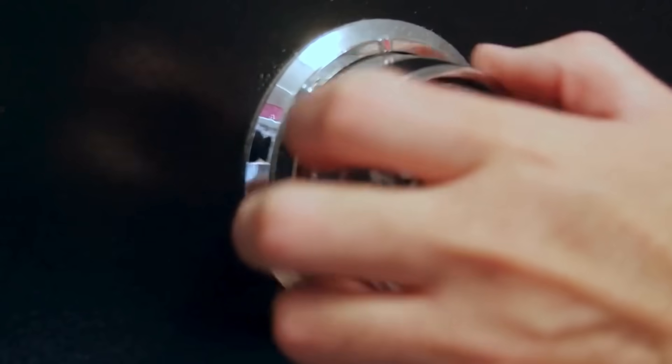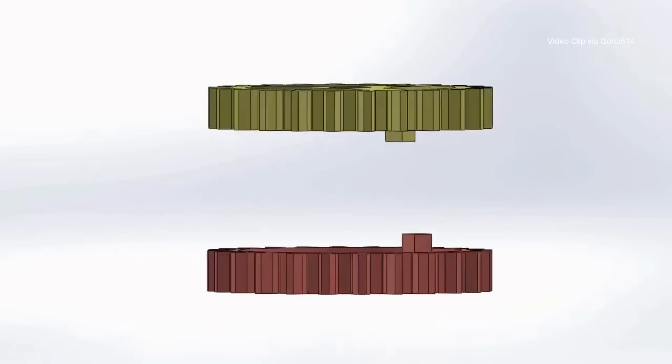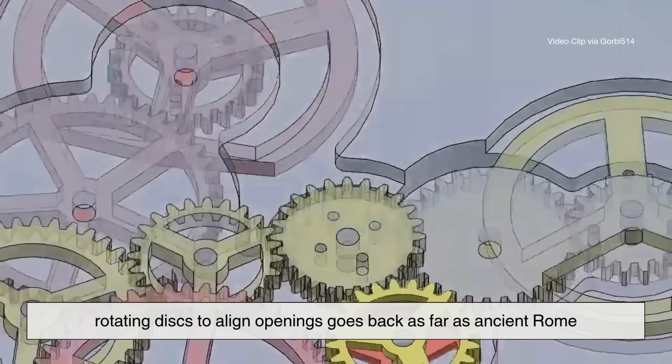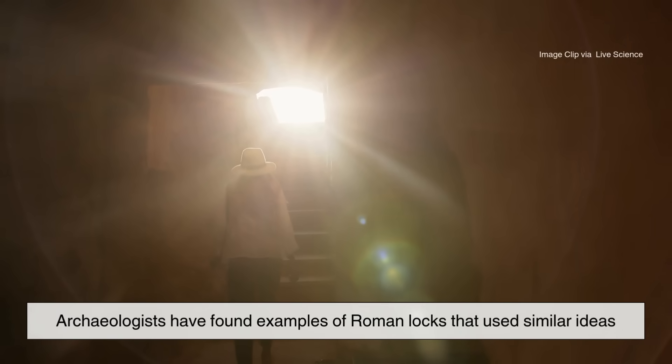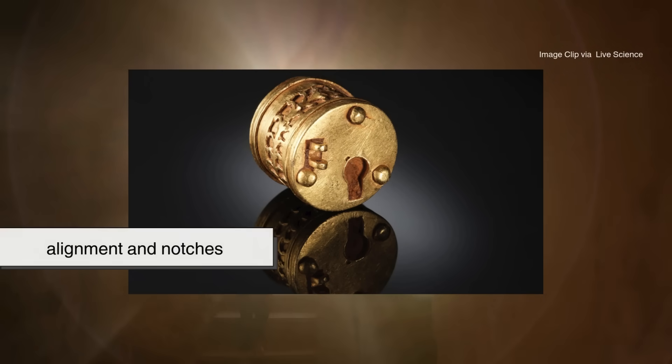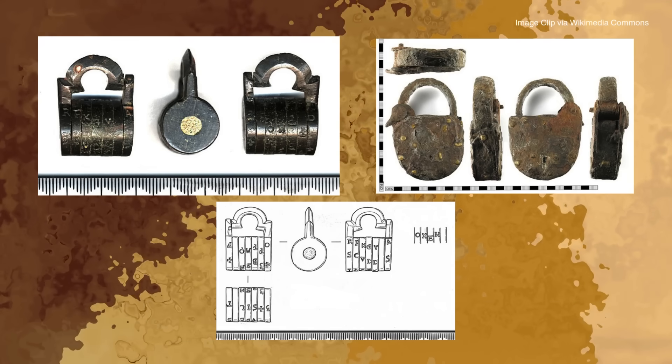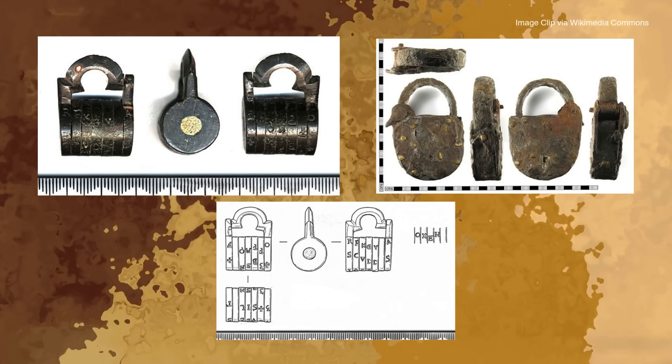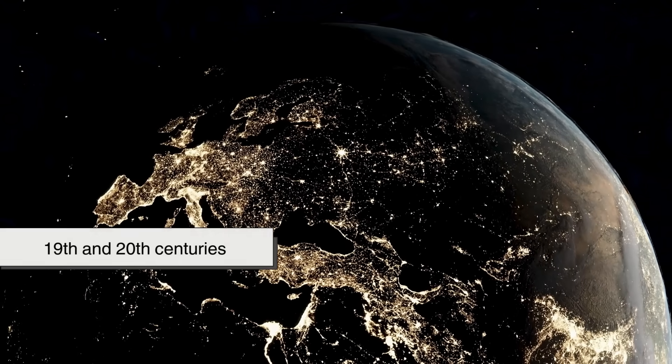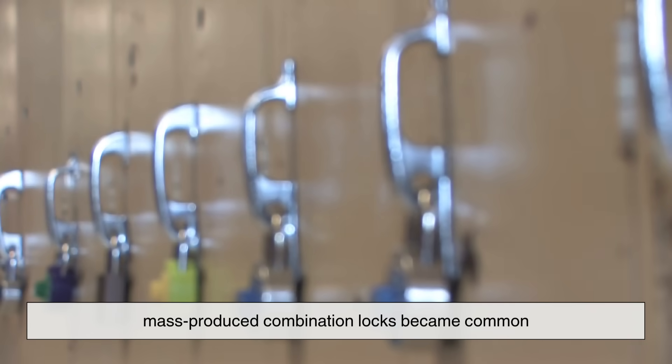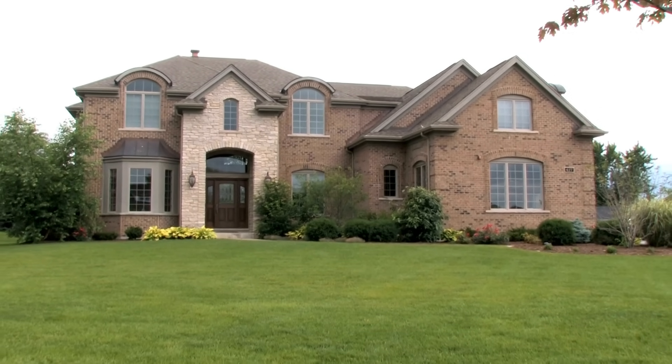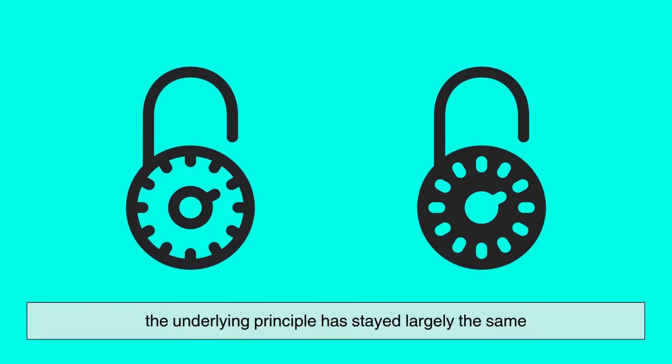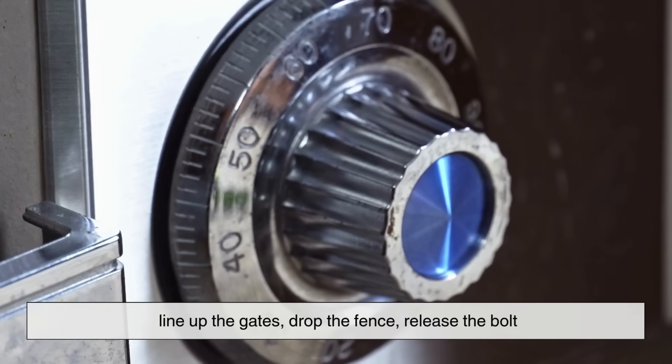It's easy to assume combination locks are a modern invention, but they actually have a long history. The concept of using rotating discs to align openings goes back as far as ancient Rome. Archaeologists have found examples of Roman locks that use similar ideas of alignment and notches to secure valuables. Over time, these designs evolved and became more precise with industrial manufacturing. By the 19th and 20th centuries, mass-produced combination locks became common in schools, banks, and homes. And despite all the changes in materials and styles, the underlying principle has stayed largely the same. Line up the gates, drop the fence, release the bolt.